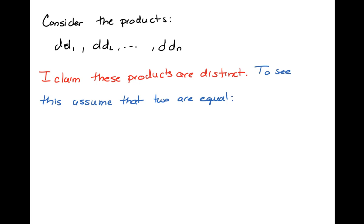Well, if they were equal, I'm going to assume that two were equal and see what happens. Let's suppose that I have d times di, one of those products, that's equal to d times dj.